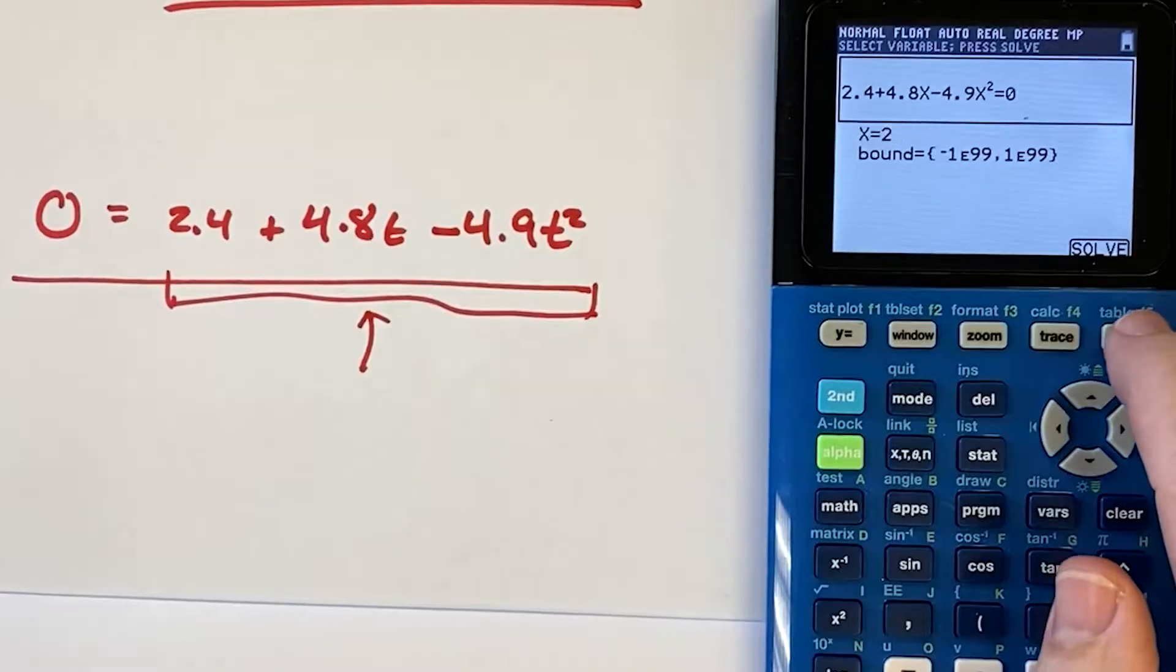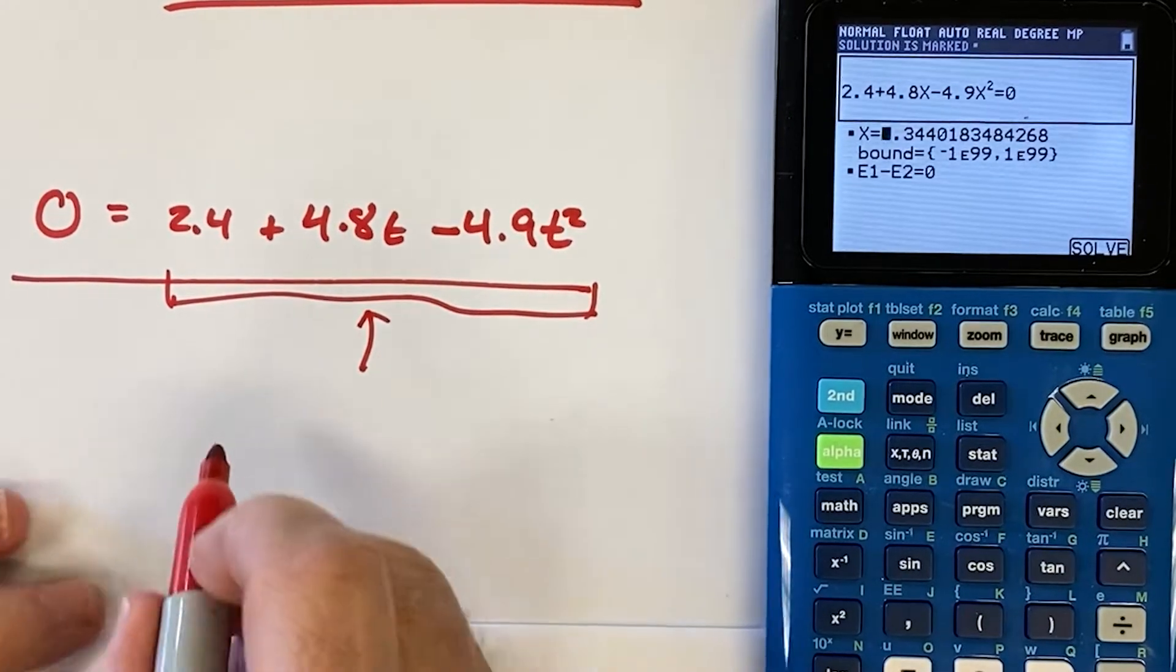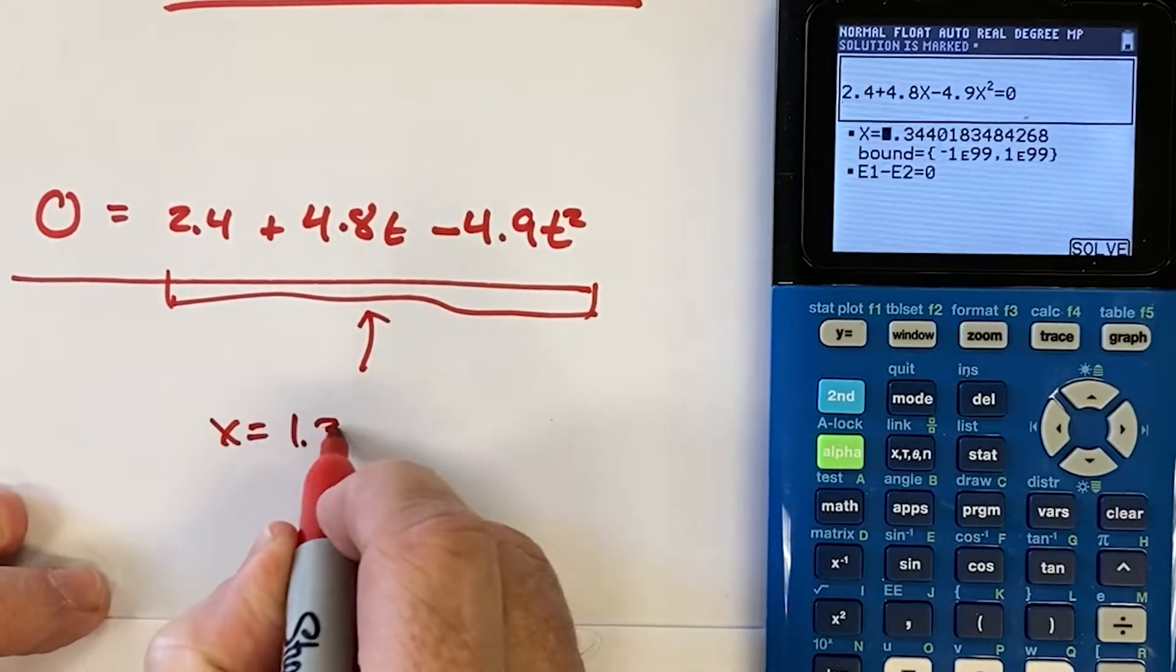And then I'm going to just click solve. And it says, there you go, look, you see X is equal to 1.34.